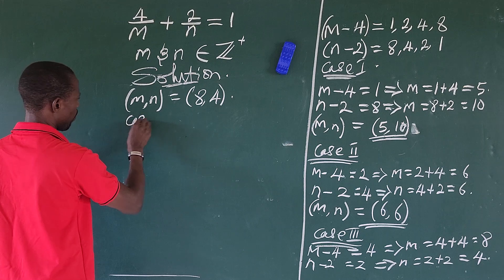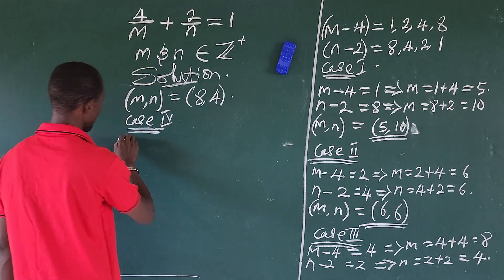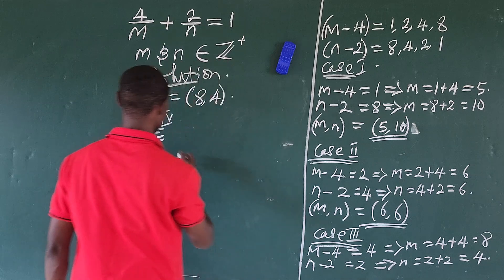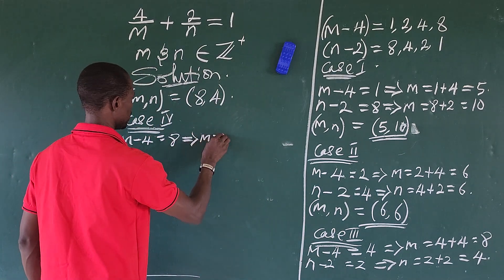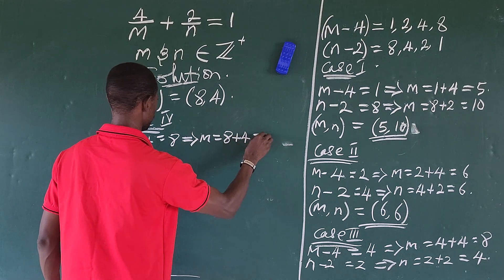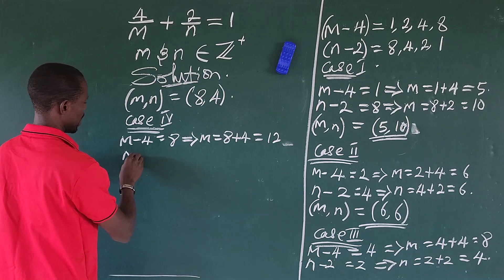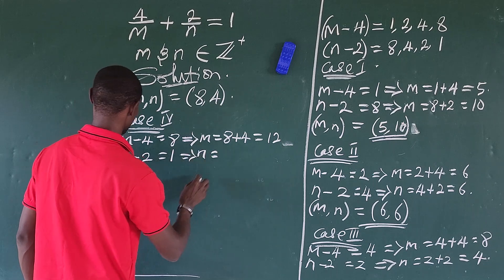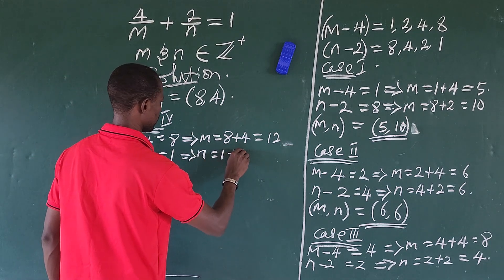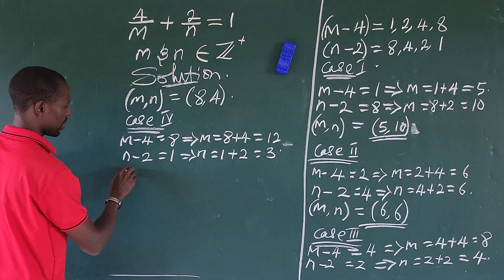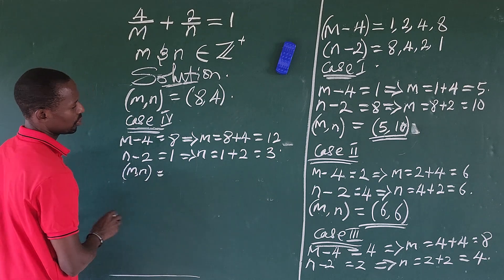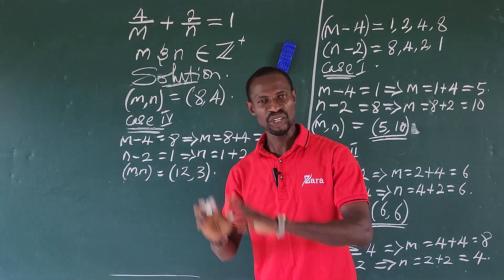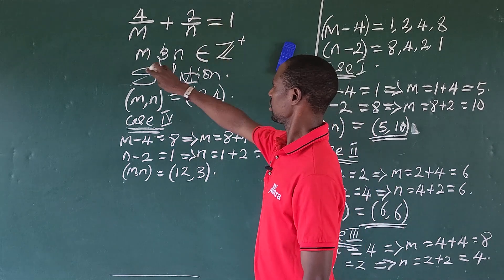Case 4: m minus 4 equals 8, so m equals 8 plus 4 which is 12. And n minus 2 equals 1, so n equals 1 plus 2 which is 3. So from Case 4 we have (m, n) = (12, 3).